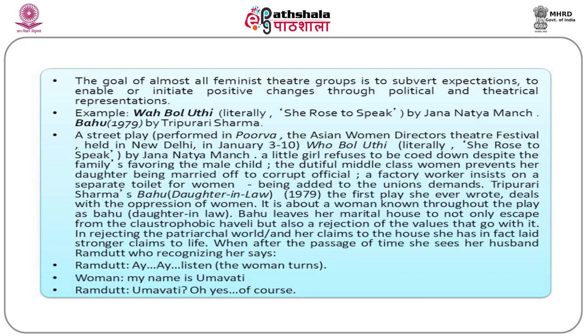When Bahu's husband Ramadath recognizes her, she says, 'My name is Umavati.' By articulating her name, the Bahu long known only as Bahu articulates her identity. Ramadath asks her to return; she refuses. He then asks for the child, but she insists he cannot possess what he disowned at birth — the child belongs to her alone. She walks away firm and calm. Like Shakuntala she maintains distance and seeks no reconciliation, but unlike Shakuntala she stakes a claim to the child. We can also draw a parallel with Sita, who prefers to be absorbed by the earth rather than return to Ayodhya.